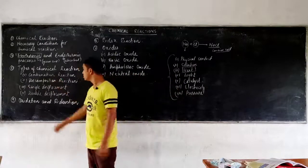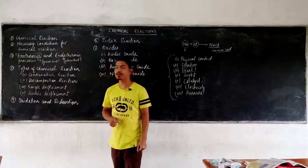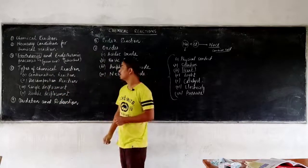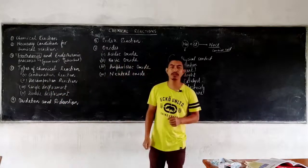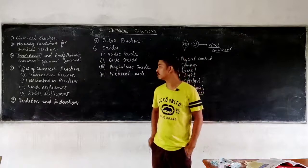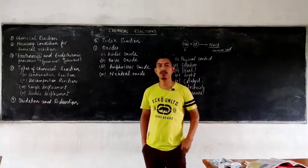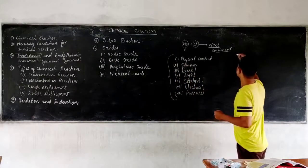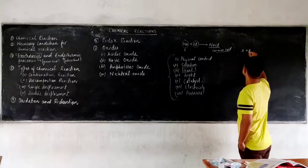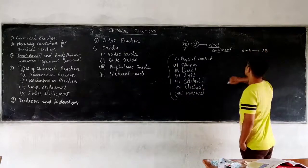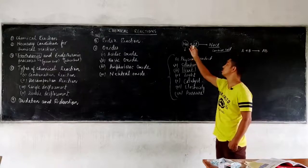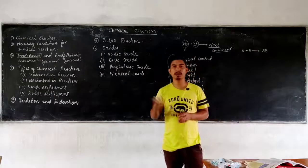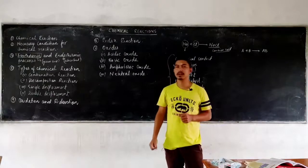Coming to the fourth point: types of chemical reactions. There are various types, but here we will cover the ones in your book. The first is the combination reaction. As the name suggests, two elements combine to form a new product. Generally, if A and B are the two reactants, they combine to give AB. For example, sodium and chlorine combine to form sodium chloride. Such reactions where two reactants combine to form one single product are known as combination reactions.